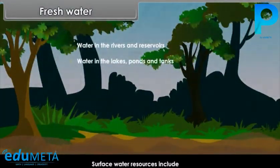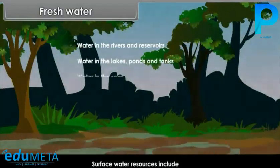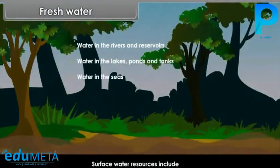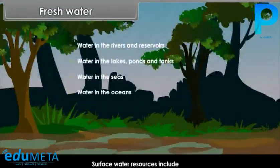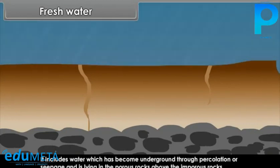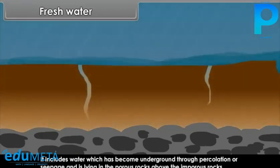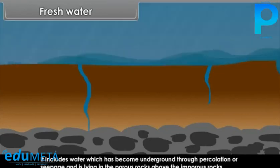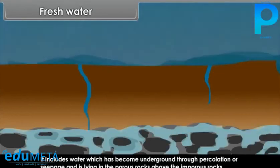Surface water resources include water in the rivers and reservoirs, water in the lakes, ponds and tanks, water in the seas, and water in the oceans. Underground water resources include water which has become underground through percolation or seepage and is lying in porous rocks.